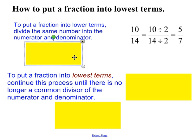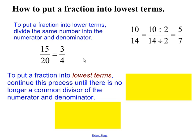In the second example, I have 15 over 20. I notice that 5 is a common divisor of 15 and 20. 15 divided by 5 is 3, and 20 divided by 5 is 4. So therefore, 15 twentieths is equal to 3 fourths.